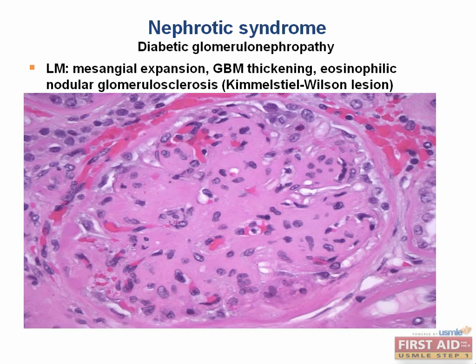As seen in this image, there are acellular ovoid nodules in the periphery of the glomerulus. These are the classic Kimmelstiel-Wilson nodules seen in this disease and should always point you towards the diagnosis of diabetic glomerulonephropathy. You can also appreciate the diffuse thickening of the basement membrane, which will aid in your diagnosis of a diabetic process.